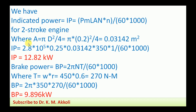First, A = π D² / 4 = π × (0.2)² / 4 = 0.03142 m². Then IP = (2.8 × 10⁵ × 0.25 × 0.03142 × 350 × 1) / (60 × 1000) = 12.82 kW. So indicated power IP = 12.82 kW.